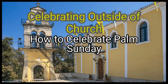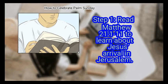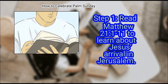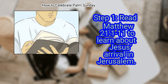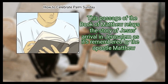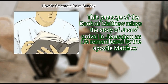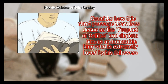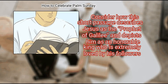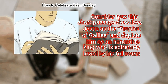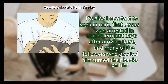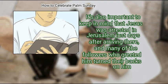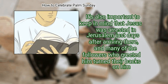Method 2: Celebrating outside of church. First, read Matthew chapter 21, verses 1 to 11 to learn about Jesus' arrival in Jerusalem. This passage of the book of Matthew relays the story of Jesus' arrival in Jerusalem as its prophet, remembered by the apostle Matthew. Consider how this short passage describes Jesus as the prophet of Galilee and depicts Him as an honorable king who is extremely loved by His followers. It's also important to keep in mind that Jesus was arrested in Jerusalem just days after arriving there, and many of the followers who greeted Him turned their backs on Him.